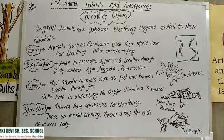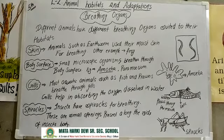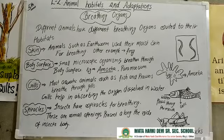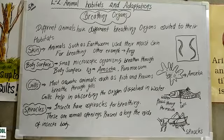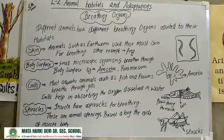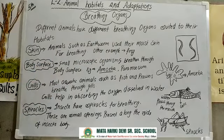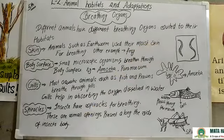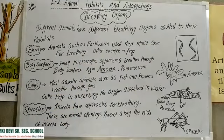Different animals have different breathing organs suited to their habitats. For example, first is skin. Animals such as earthworm use their moist skin for breathing. Another example is frog — frogs also use their skin for breathing inside the water.